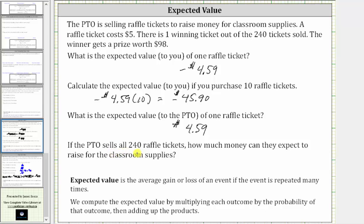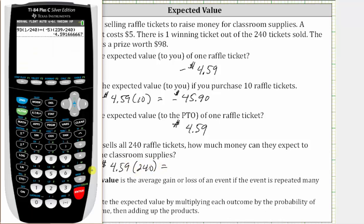The last question is: if the PTO sells 240 raffle tickets, how much money can they expect to raise for classroom supplies? That's going to be the expected value of one raffle ticket times 240. So $4.59 times 240 equals $1,101.60.